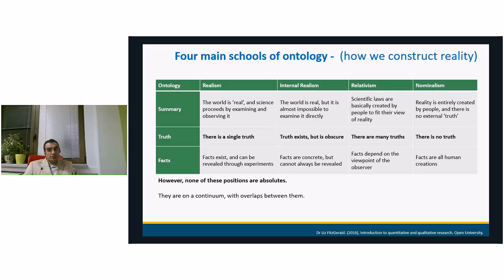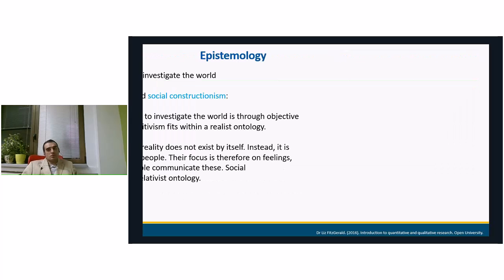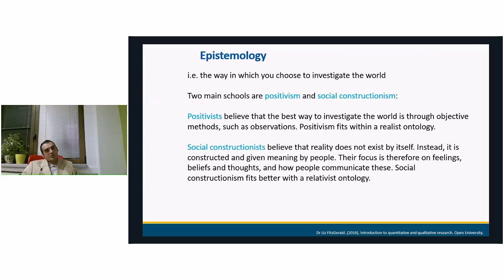So we have seen these four schools: realism, internal realism, relativism, and nominalism. Related to them, we have epistemology, which is the way you choose how you can investigate the world around you. Basically, there are two main schools in epistemology: positivism and social constructionism.